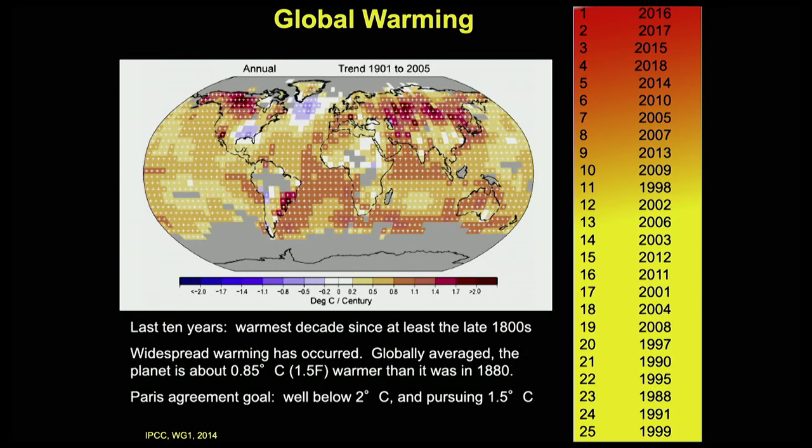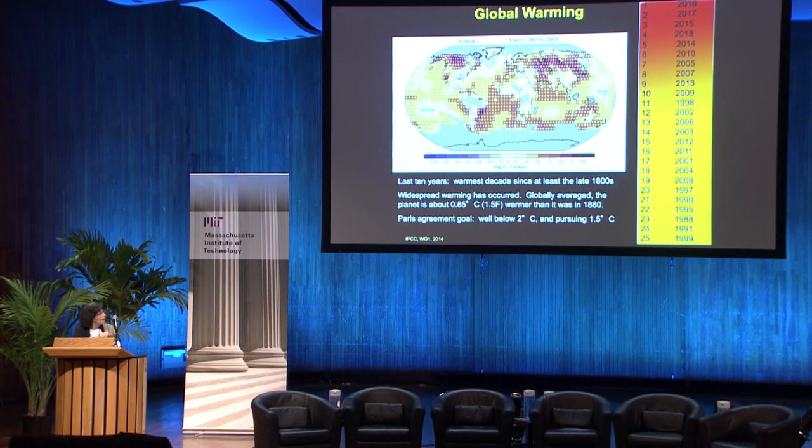It's also very sobering to take a look at the 25 warmest years that have ever been measured. If you're 32 years old or more, you've been alive for every single one of them. Even if you're only 20, you've been alive for the great majority of them. What that tells you is that we, this generation of people, are living on the warmest planet that has ever been measured in the instrumental record.